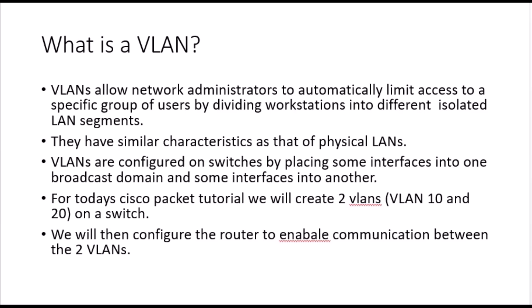For today's Cisco Packet Tracer tutorial, we will create two virtual LANs — VLAN 10 and VLAN 20 — on a switch, and then enable routing so that we can communicate between the two VLANs. We will have four PCs, two VLANs, a switch, and finally a router to enable routing between the two VLANs.